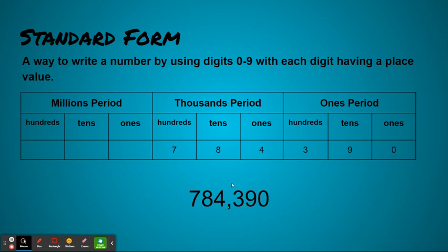It's basically pulling those numbers out of that place value chart, but now they all have their own place to go and each one of them has its own represented value. So this number would be seven hundred eighty-four thousand, three hundred ninety and it is written in standard form.